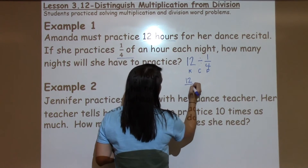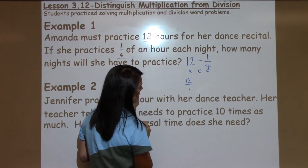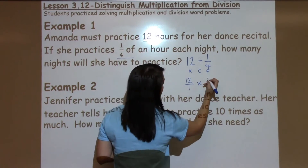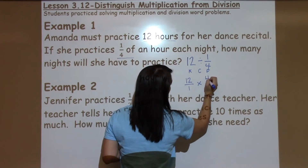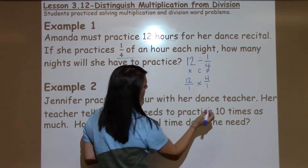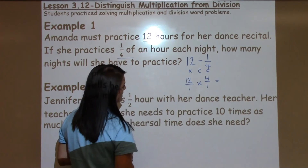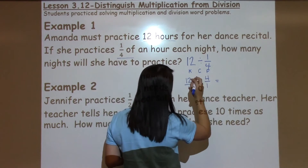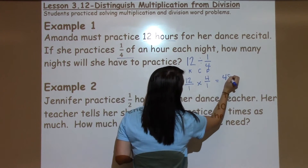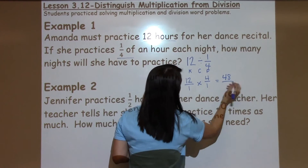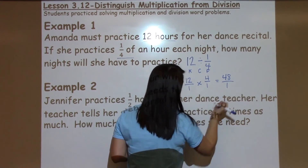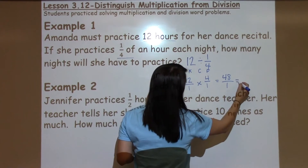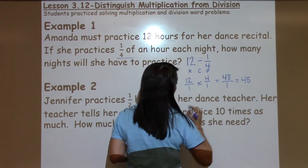Keep the 12 over 1 — I'll just put it in fraction form — change to multiplication, and then flip the one-fourth to 4 over 1. Once I have it all lined up, I'm going to take top times top: 12 times 4 is 48, and 1 times 1 is 1, so my answer becomes 48 nights.